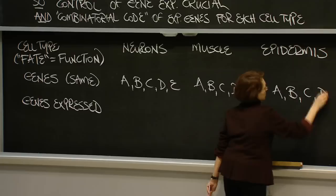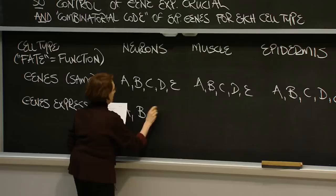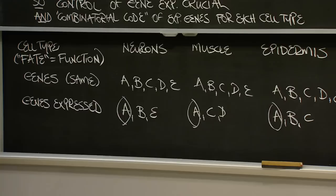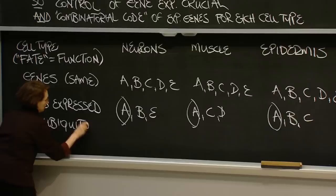Only some genes are used in each cell type. In neurons, A, B, and E are used; in muscle, A, C, and D; and A, B, and C in epidermis. Gene A is expressed in all cell types — it's called a ubiquitously expressed gene, sometimes termed a housekeeping gene. Genes B and C are expressed in some but not all cell types — these have restricted expression. Genes D and E are only expressed in one cell type each — these are cell type-specific genes.